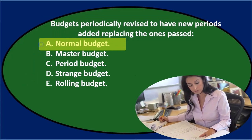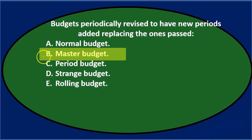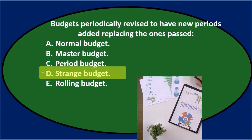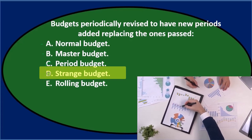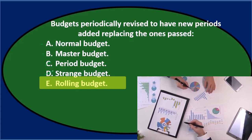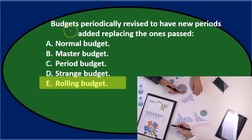B says master budget — that sounds like a familiar term, so I'll keep it for now. C says period budget — that almost seems made up, so I'm going to cross it out. D says strange budget — that sounds a little unusual and I doubt that's the term. E says rolling budget — and if I apply what's happening here, that sounds kind of rolling-ish, so that's a strong candidate.